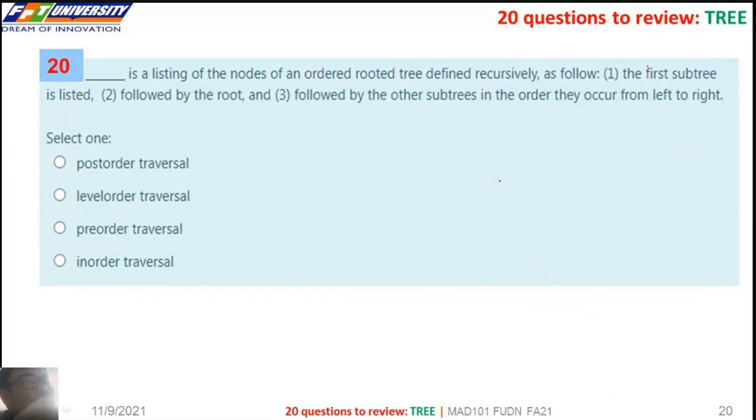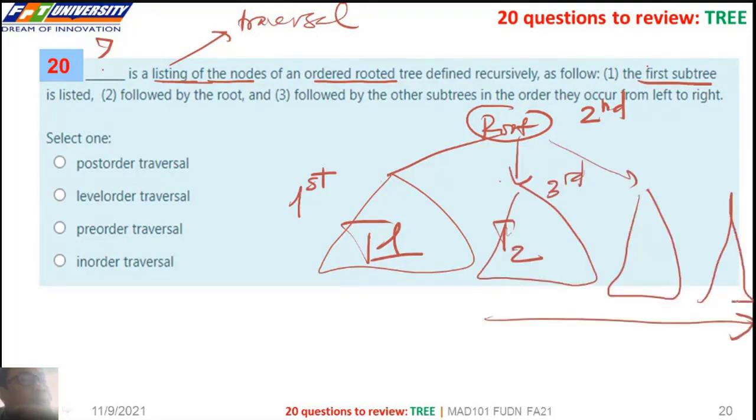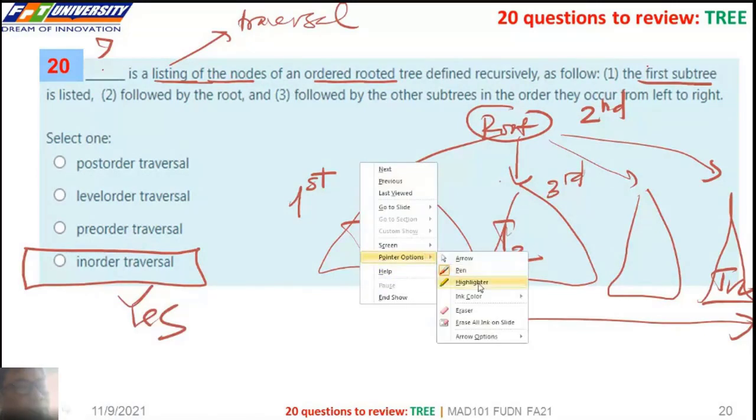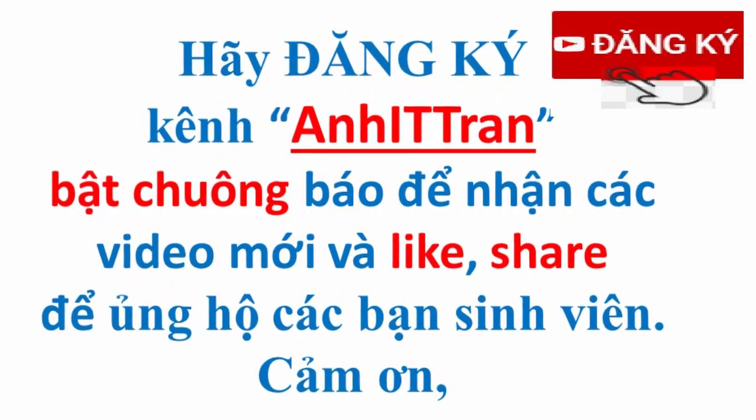So the tenth question. What is the listing of the node? The listing may be the traversal. The first subtree, a list, followed by the root. The first subtree and the root, and followed by the other subtree in the order they occur from the left to right. This is T1, for the third. Here, we have Tn. In order.